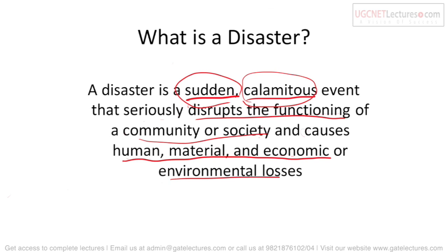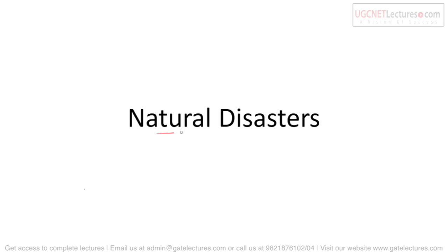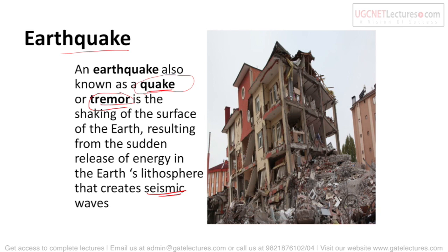Disasters are mainly of two types: natural disasters and man-made disasters. Natural disasters are those in which nature plays the main role and human beings have no direct effect. Natural disasters include earthquake, volcanoes, floods, droughts, cyclones, tsunami, wildfires, and landslides. We will discuss each one by one to understand what natural disasters are, how they happen, and what steps and mitigations we can take to control them.